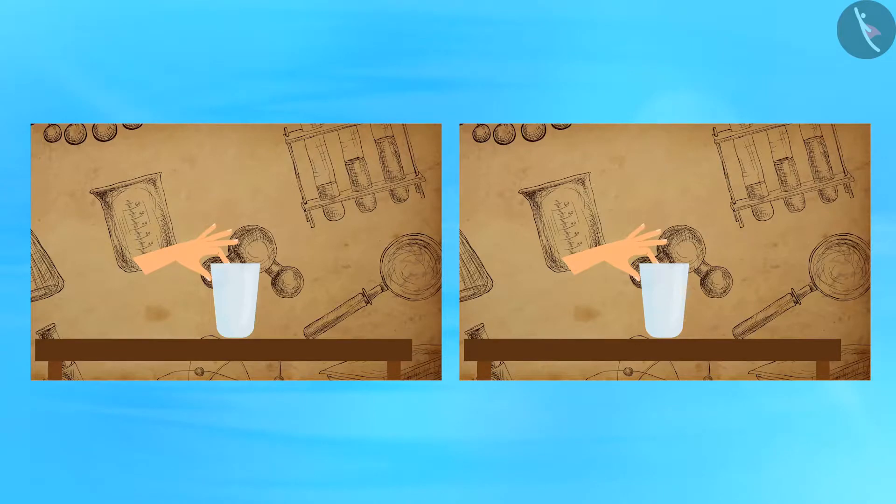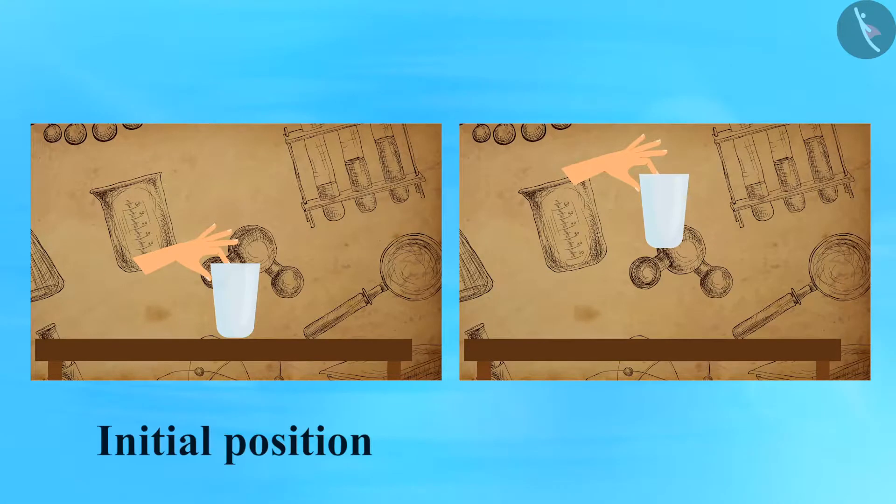When an object is raised to a certain height, then the work done on the object depends on the difference between the vertical heights of the initial position and final positions of the object, and not on the path taken by the object.